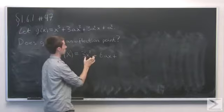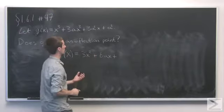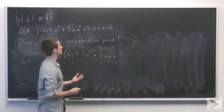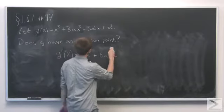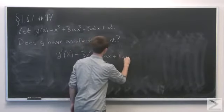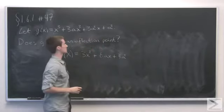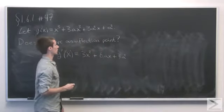And plus 3a squared is the constant here because our function g is in terms of x. We're taking the derivative with respect to x. So this term just becomes 3a squared, and the derivative of a constant is 0.